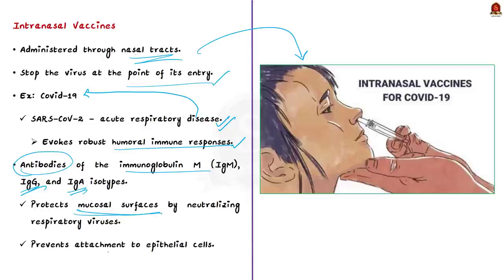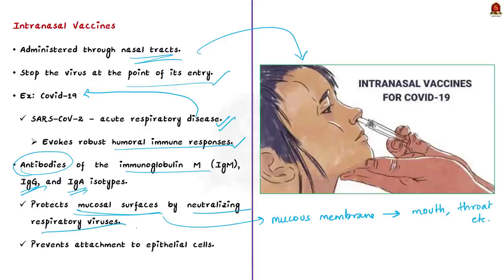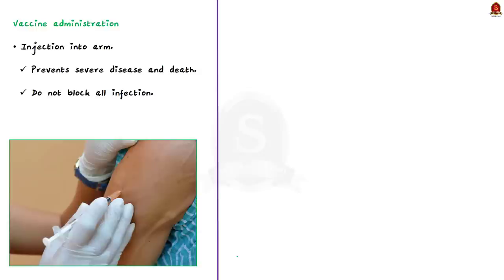Particularly, the IgA isotype — immunoglobulin A — plays a crucial role in protecting mucosal surfaces against pathogens. Mucosal surfaces are those which have mucous membranes; they line many tracts and structures of the body like mouth, nose and eyelids. IgA protects mucosal surfaces by neutralizing respiratory viruses or preventing the pathogen's attachment to the epithelial cells in the mucosal surfaces. So the first barrier the virus faces is through the IgA in the nose. But if you see the vaccines developed for COVID-19, they are intramuscular injections — given deep into muscle where the medication is absorbed quickly by the surrounding blood vessels. But we know that SARS-CoV-2 attacks us via the respiratory tract.